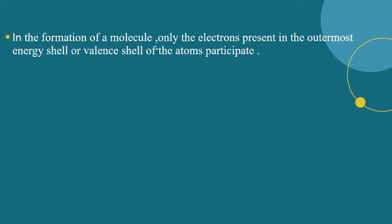In the formation of a molecule, only electrons present in the outermost shell — the valence shell — participate. Innermost electrons do not participate in the combination process. So in the case of the Lewis symbol, valence shell electrons participate.